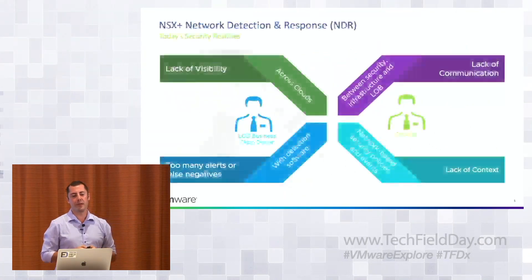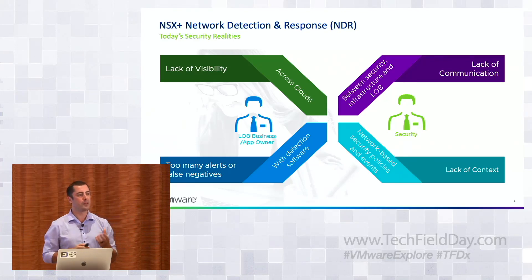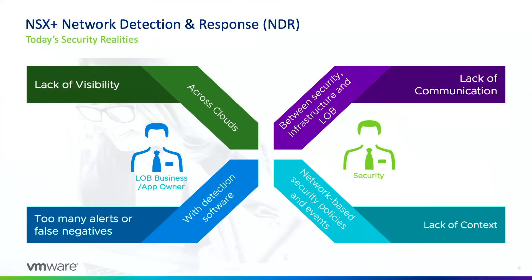What are some other challenges that security teams are seeing? Lack of visibility, especially across clouds, is a huge challenge. It's really hard to understand what the appropriate security posture should be, what workloads are deployed anywhere in the organization, and what security incidents are affecting them. Too many alerts — or not enough alerts — is a challenge as well. If you're overwhelmed with alerts, it becomes very hard to focus on the things that truly matter.